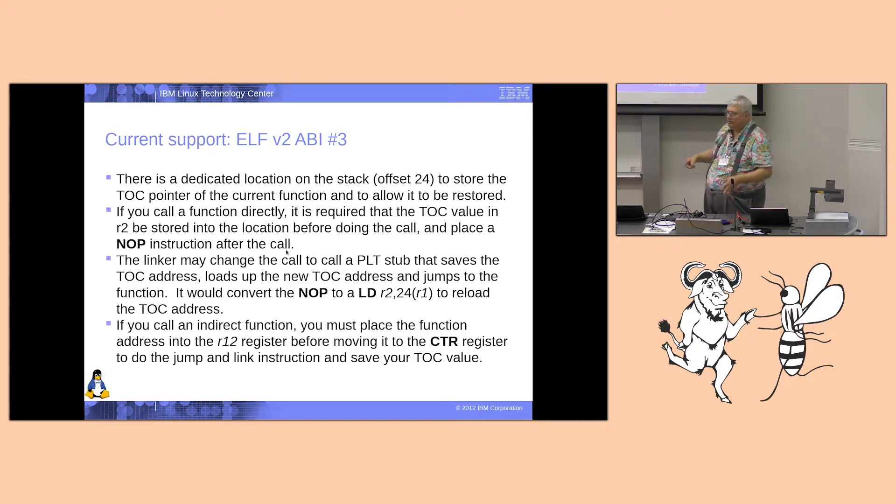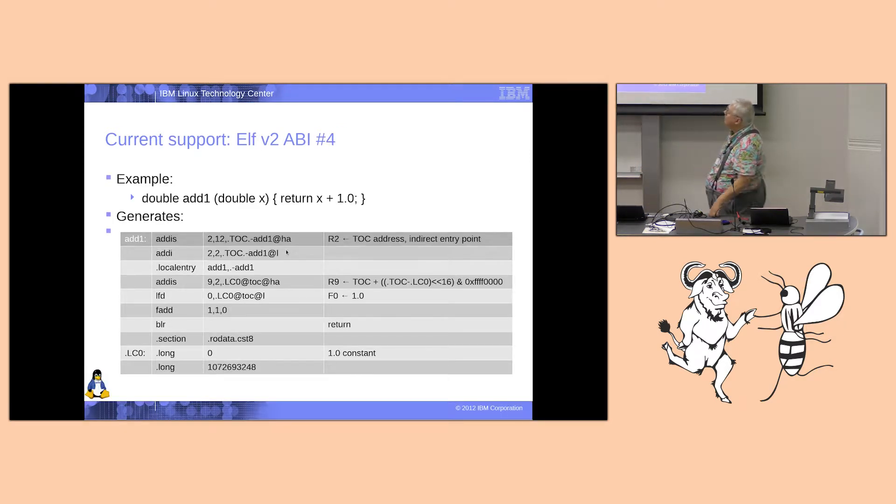And if you're calling an indirect function in LE, it has to be R12 and then it moves it into the CTR register. PowerPC only has two registers that can do an indirect jump through. But the code expects it in R12. And again, here's an example just adding a 1.0. So it has the first two lines are the external entry point and then the next line just says where the internal and external entry points are. It loads up the ADDIS, loads up the high part of the thing with the TOC pointer, then it loads up the floating point constant, does an add, and then return.